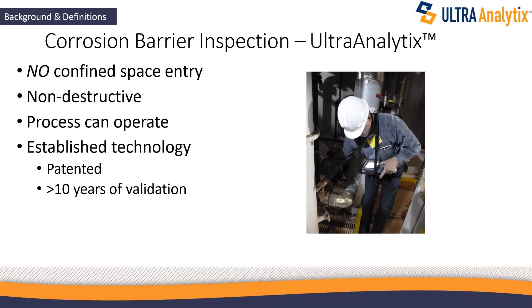Ultra-analytics performs a different kind of corrosion barrier inspection. Here we actually see a photo of an inspector placing an ultrasonic transducer. Using a conventional off-the-shelf ultrasonic flaw detector and saving a reading by following a special procedure, that saved reading can then be used to evaluate condition at that location. You can take more readings and determine a better global overall picture. This is non-destructive — the process can continue to operate, usually with no reason to shut down. It's an established, patented technology that has had over 10 years of validation.